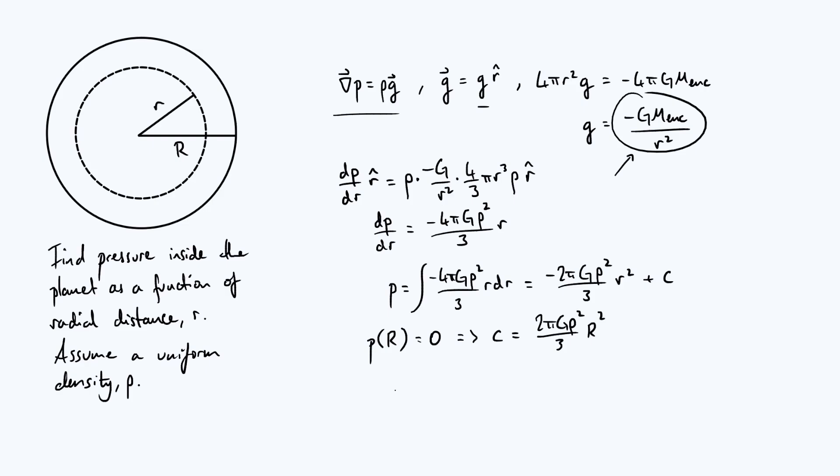And then you can put it all together to find the pressure as a function of arbitrary distance. You're just going to have those two terms combined. And we could factor out that pre-factor of 2πGρ² divided by 3. Then you're just going to have big R² minus small r².